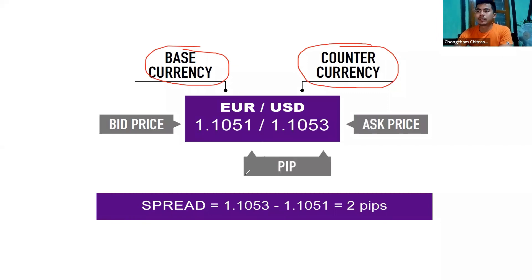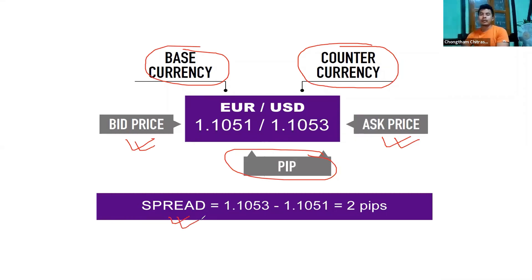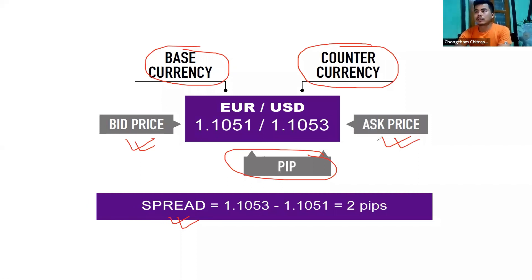Now, the bid price and ask price. The bid price is the offer selling price. The ask price is the offer buying price. If you buy, you enter at the ask price — the entry is at the higher price.